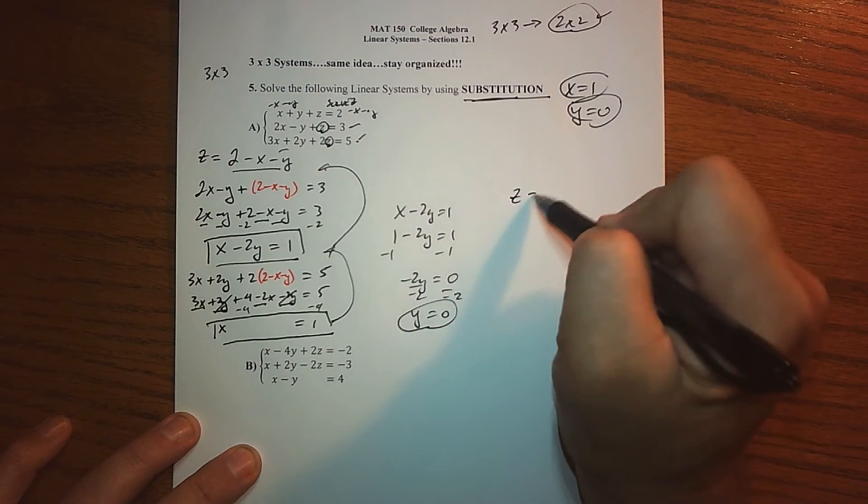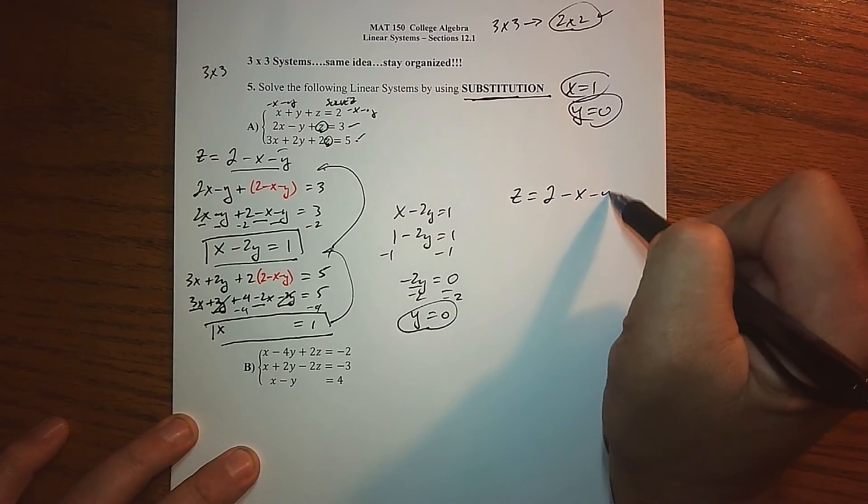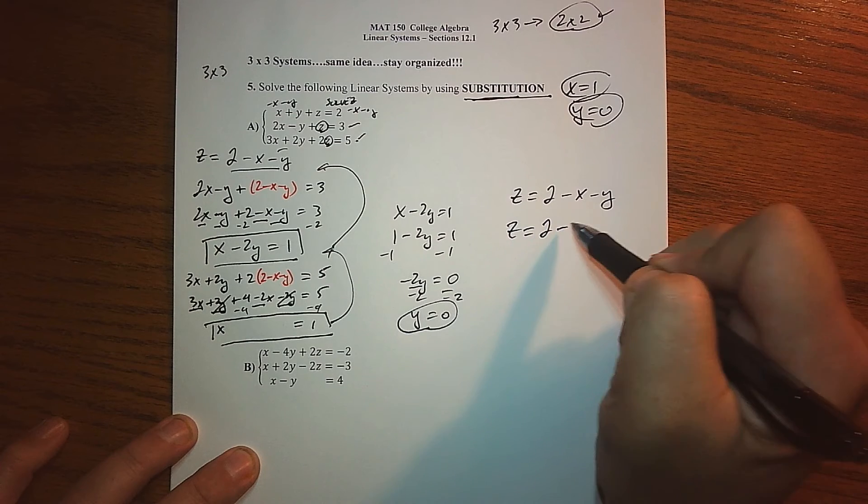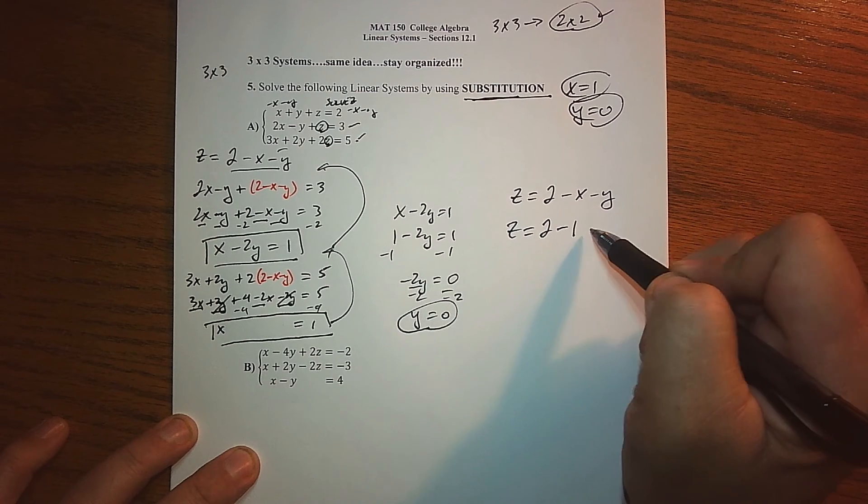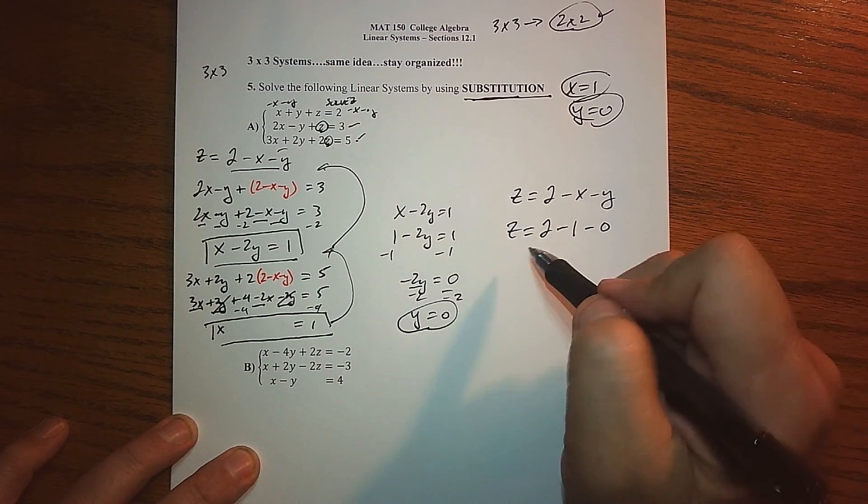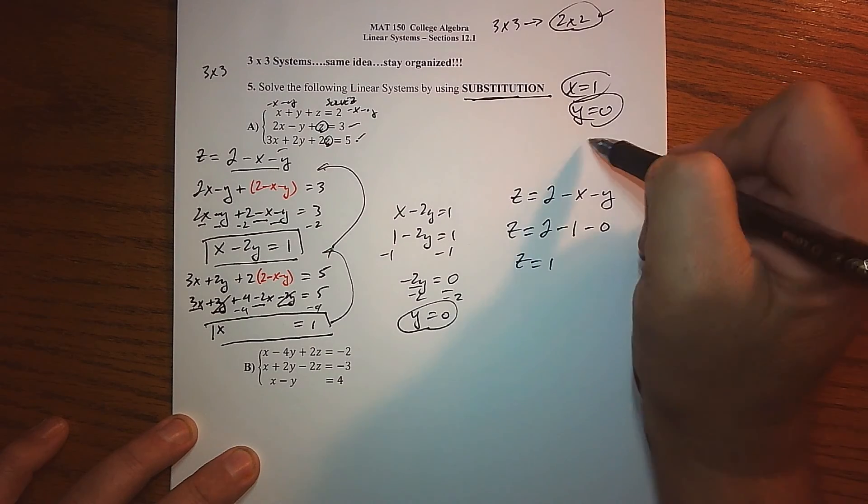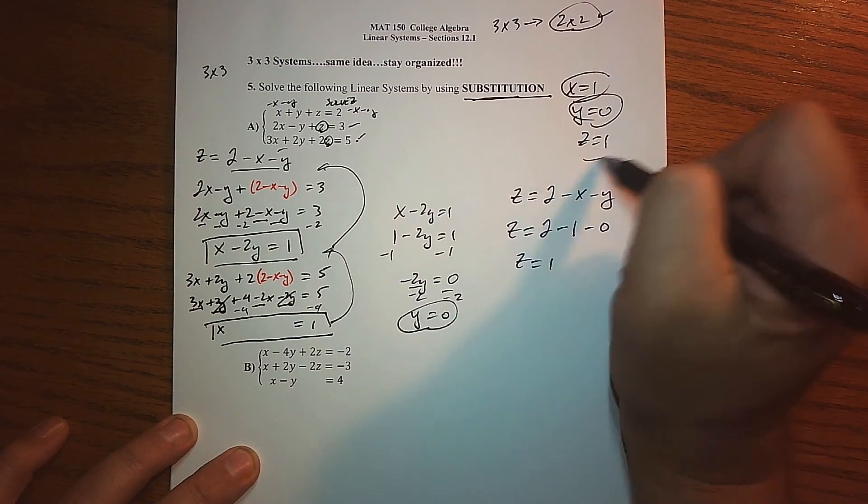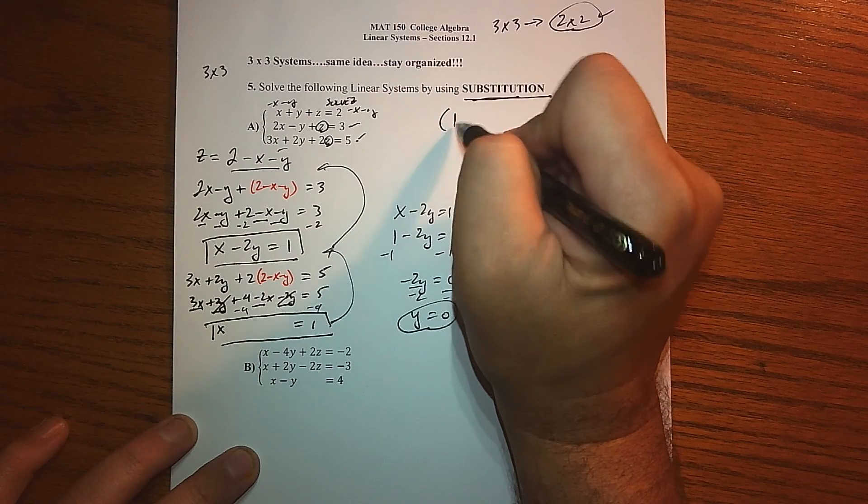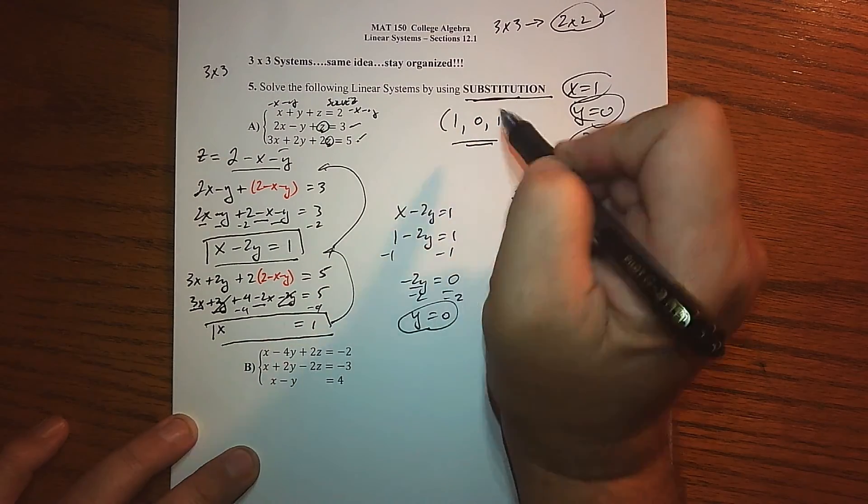Y is equal to 0. Now come back up here and substitute. Earlier we said that Z was 2 minus X minus Y. So plugging what I know - X is 1, Y is 0 - doing the math, we find that Z is 1. So this is an ordered triplet: 1, 0, 1.